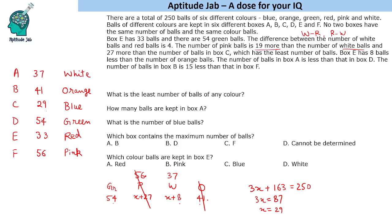This is how we will get the number of balls of different colors. What is the least number of balls of any color? Least number of balls is 29. How many balls are kept in box A? That is 37. Number of blue balls is 29. Which box contains the maximum number of balls? Maximum balls are kept in box F. Which color balls are kept in box E? That is red color balls. This is the solution to the set and the answers to the questions.